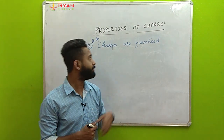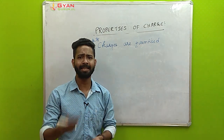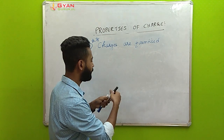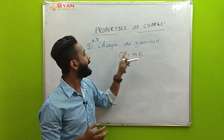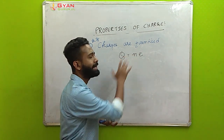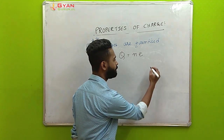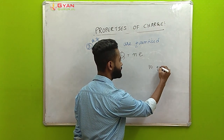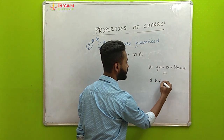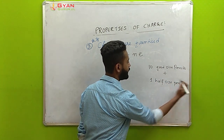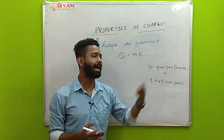The third and most important property is that charges are quantized. Students often understand this only through the formula q equals n times e, but let me give a clearer example. Suppose I have ten full-size pencils and one half-size pencil in a box.